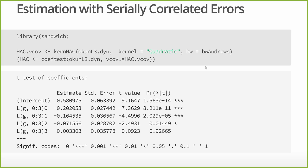We're going to use the sandwich package — great name — and inside it there's a function called kernHAC. There are a number of different approaches, and sandwich implements several, but I'm going with the one I think is best. This comes particularly from research by econometricians Stock and Watson, who have done extensive work in this area and have some very recent work suggesting there might be slight improvements, but within the scope of this class, this is in my opinion the best way to go.